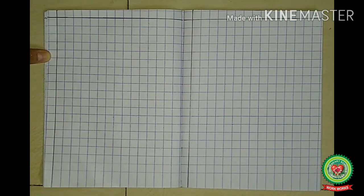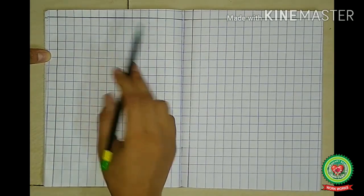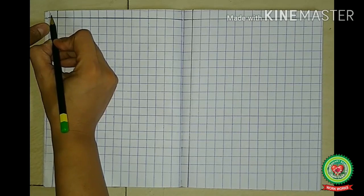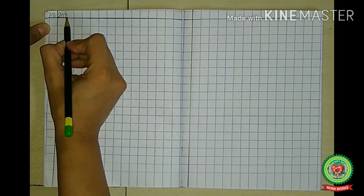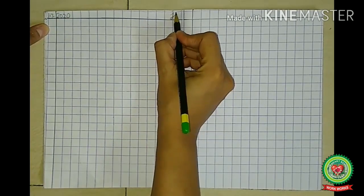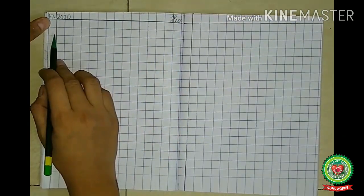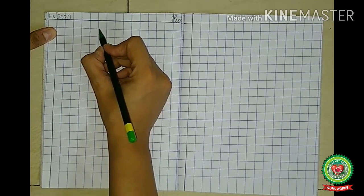Okay children, now let us do the copy approach. First of all, draw margins. Write down the date. For example, date is July 1 — you will write 1.7.2020. On the right hand side, write down homework. Leave a line.